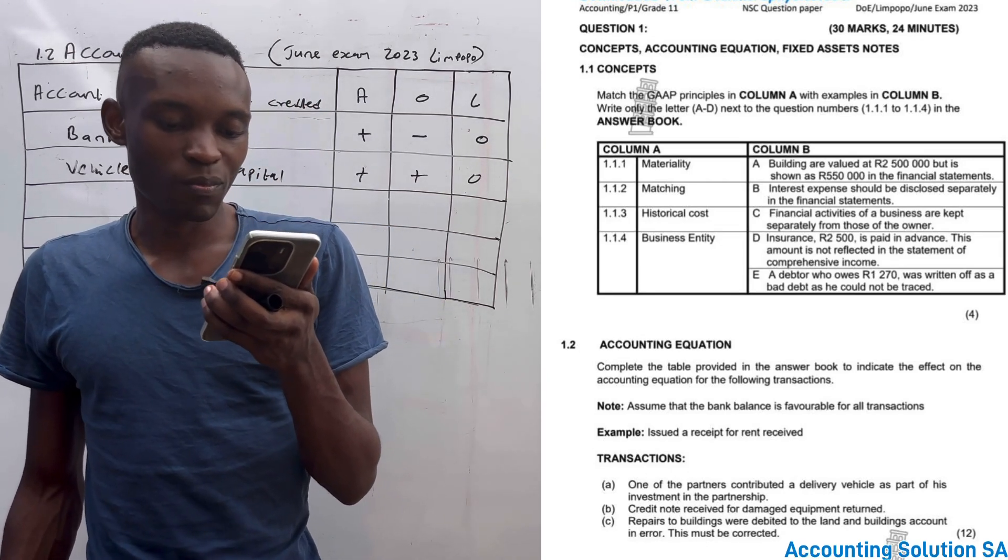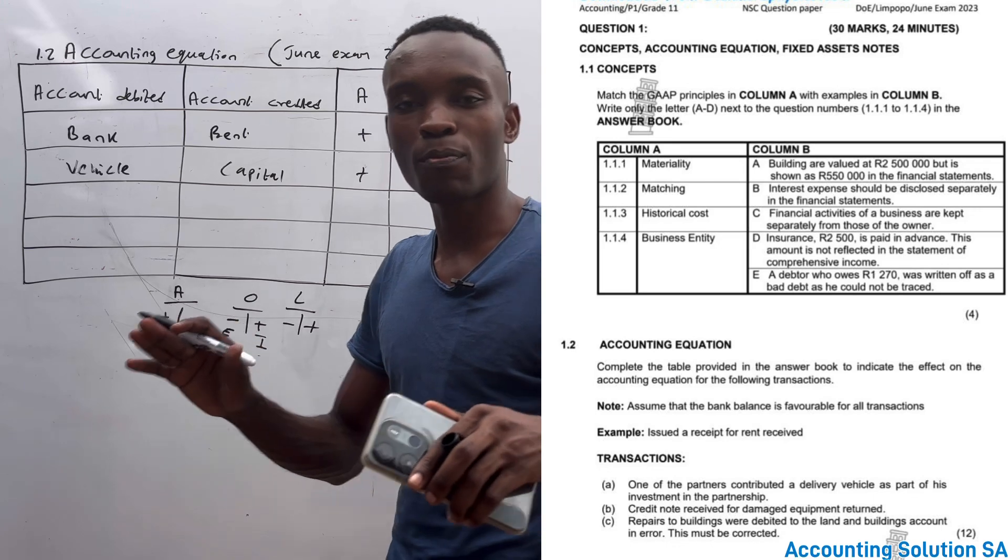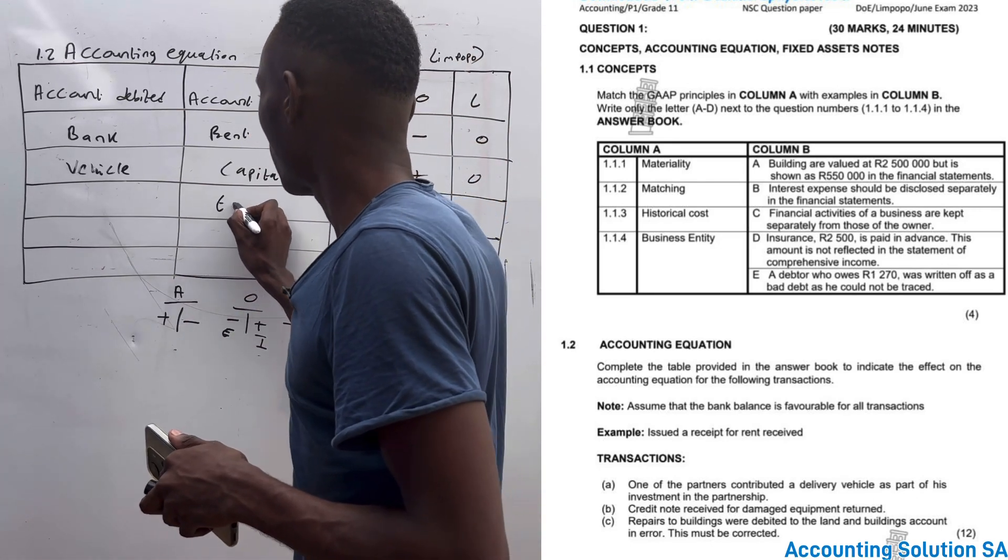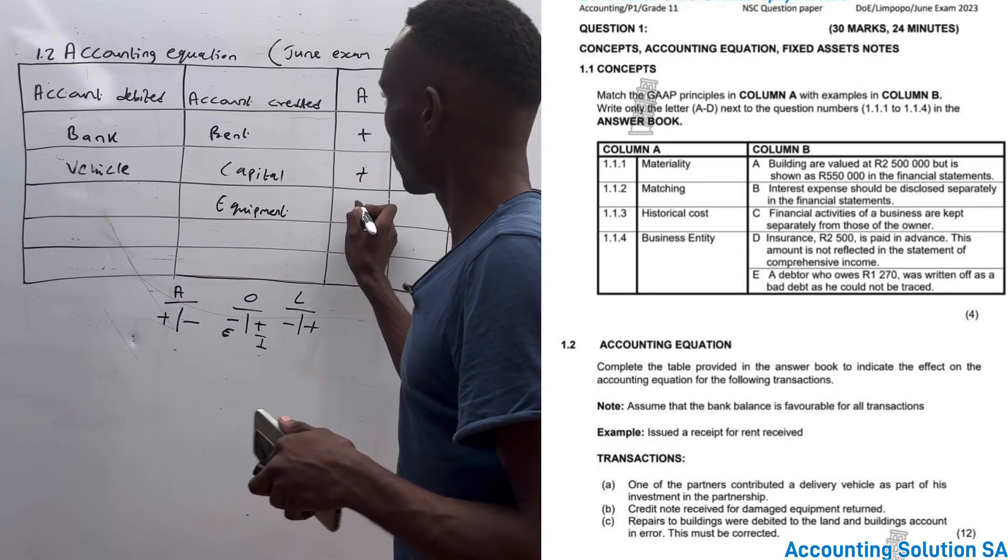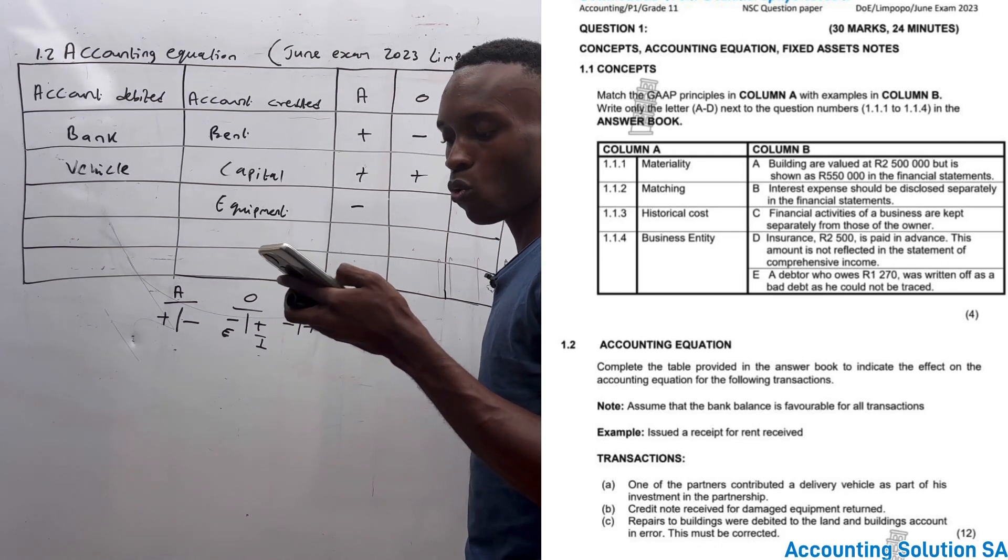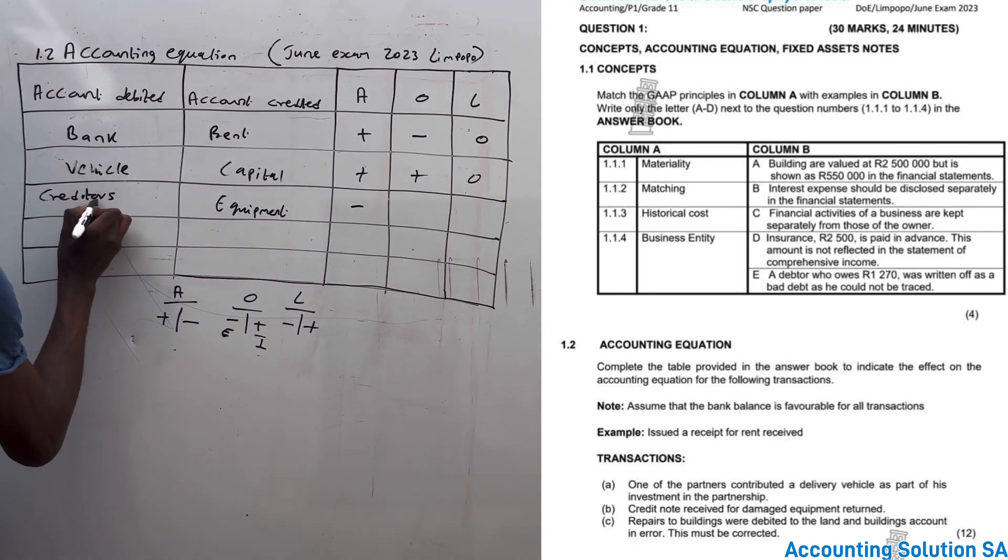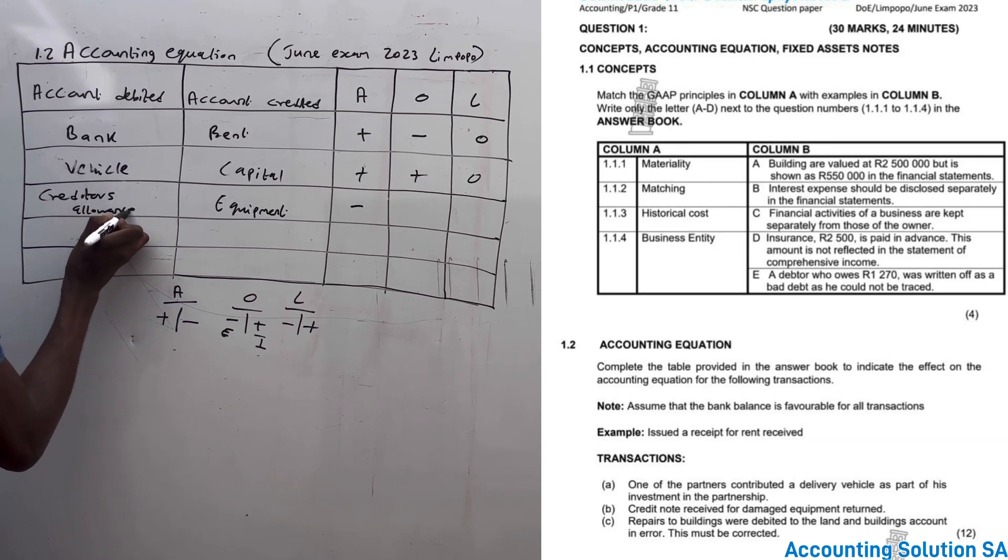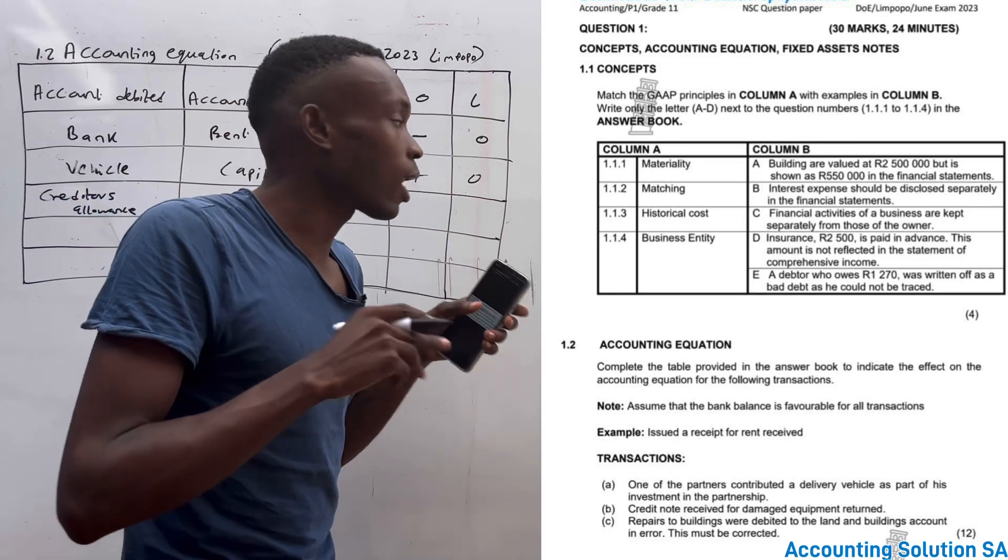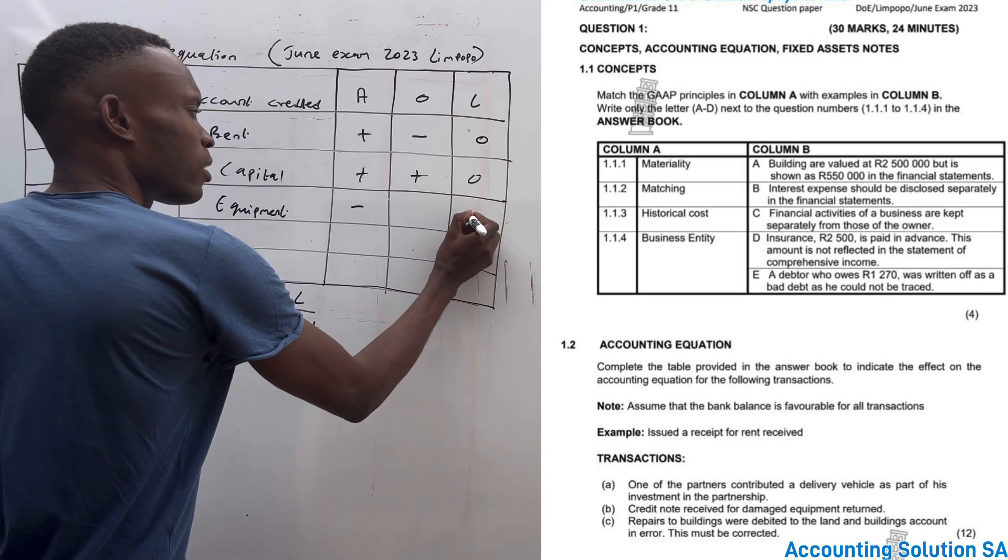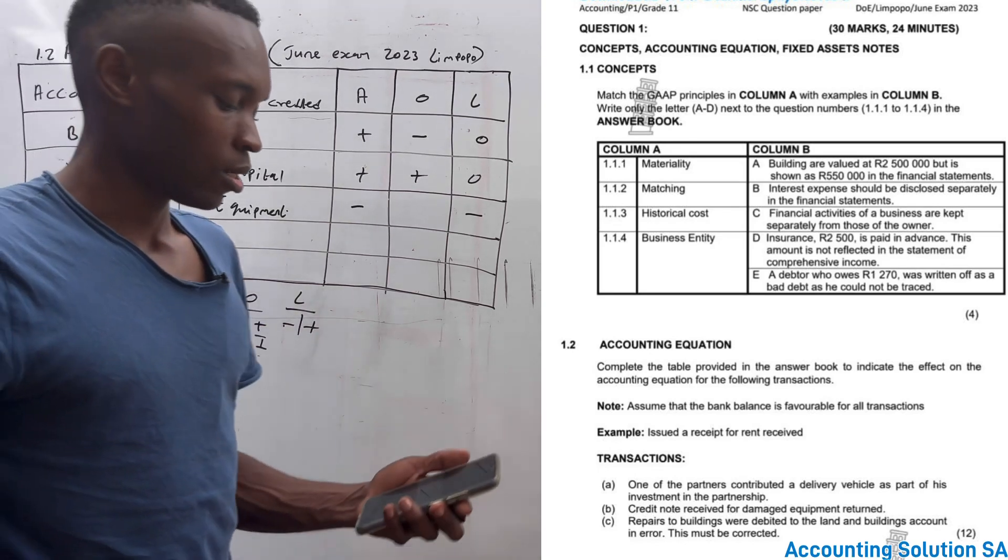Then the next one: credit note received for damaged equipment returned. We returned the equipment, our asset is gone - equipment we returned it because it has damage. We returned it to who? To our supplier, our creditors, which means that we're going to have creditors allowance. If customer returns to us it's debtors allowance, if we return to supplier it's creditors allowance. Very simple. Our liability has decreased because how can we pay something that we returned?